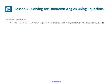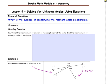This is Mrs. Appiah with Lesson 4, Solving for Unknown Angles Using Equations. Student outcomes for this lesson: students solve for unknown angles in word problems and in diagrams involving all learned angle facts. Pause the video and copy the essential question: What is the purpose of identifying the relevant angle relationship?